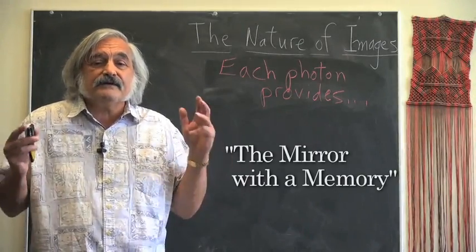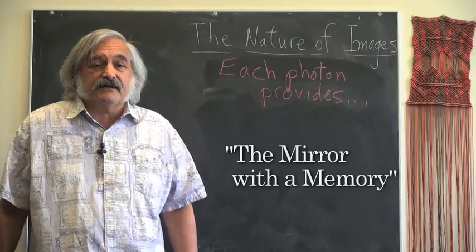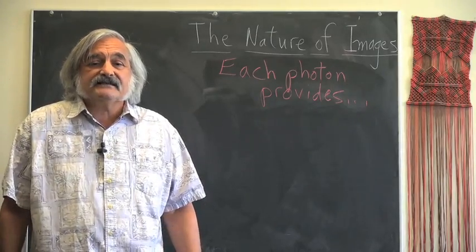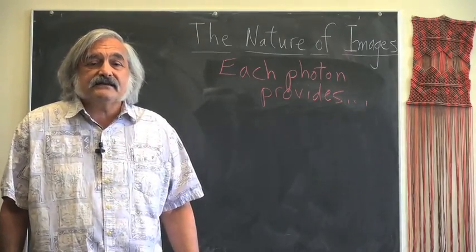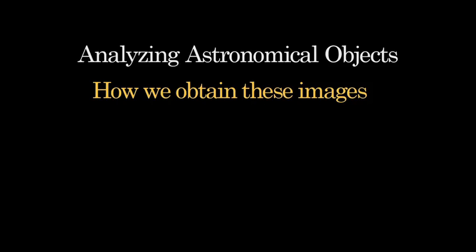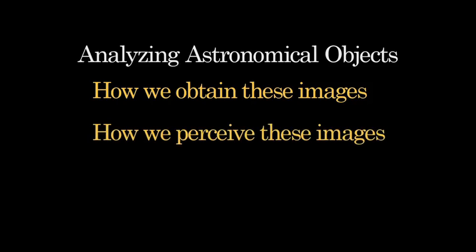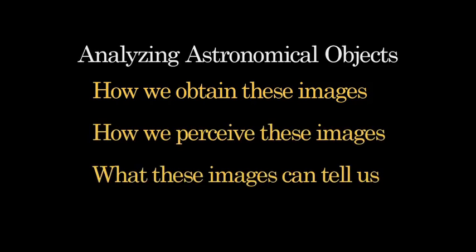The mirror with a memory is what the early daguerreotypes were called. And since photographic images of one form or another constitute almost the sole means of analyzing astronomical objects, it behooves us to understand exactly what is involved in obtaining these images, how we perceive them, and what they can tell us.